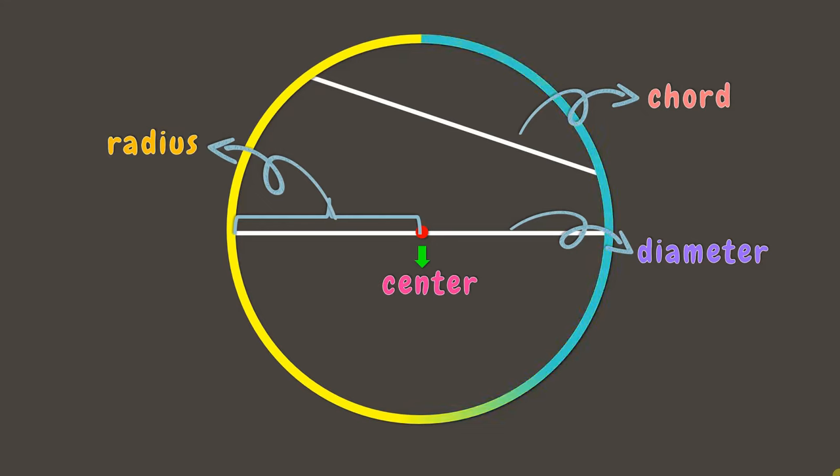Now, the distance around the circle is called circumference. A portion of circumference is what we call arc. Wonderful!